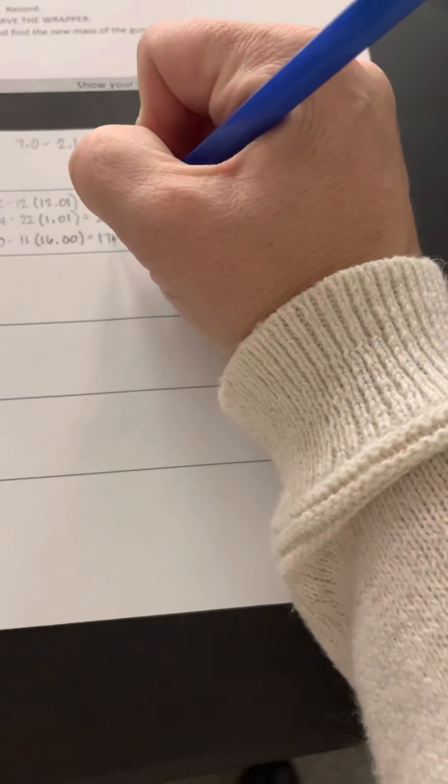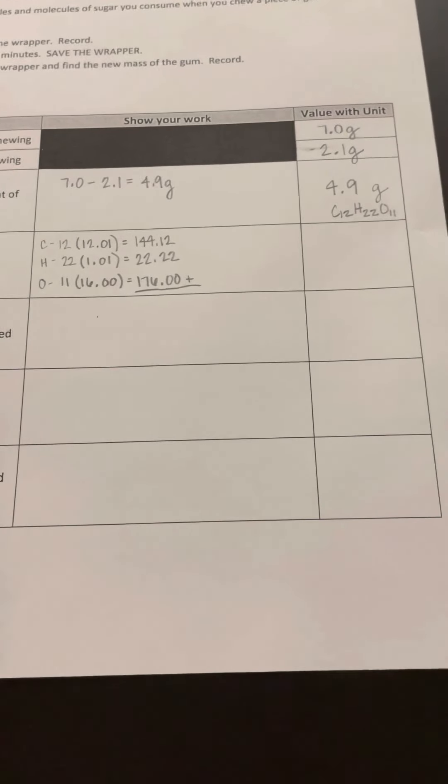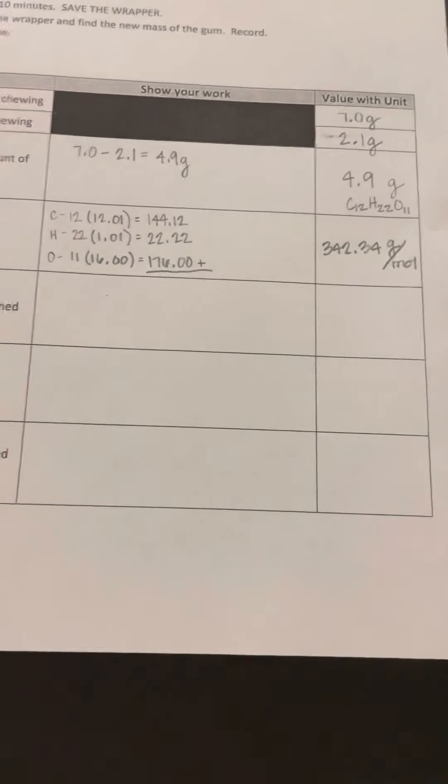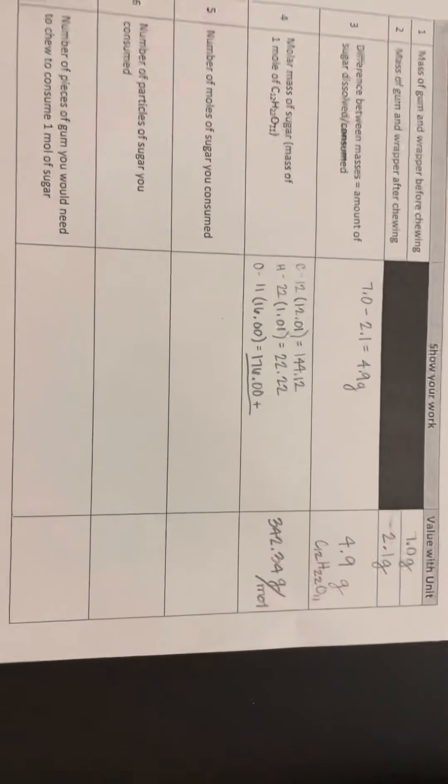And then 11 times 16 is 176.00. So I'm going to add all those up: 144.12 plus 22.22 plus 176.00, and I get 342.34. And if you remember from yesterday, the unit for molar mass is grams per mole. So I'll just let you guys take a look at that math there.